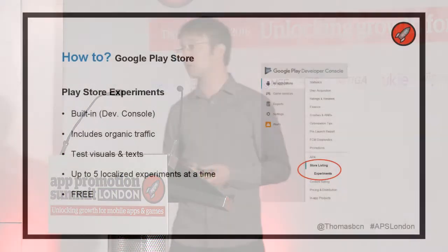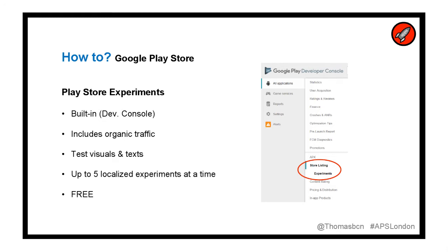On the Google Play Store it's a little bit easier because there's an official tool — the Play Store Experiment, which you can access directly from the console. The great thing here is that you've got organic traffic and you're not misleading users. You can test a bunch of things: visuals, text, not everything, but a lot. Very recently Google changed it so you can run five experiments in parallel, only in different localizations. At least this accelerates the pace of experiments you can do.